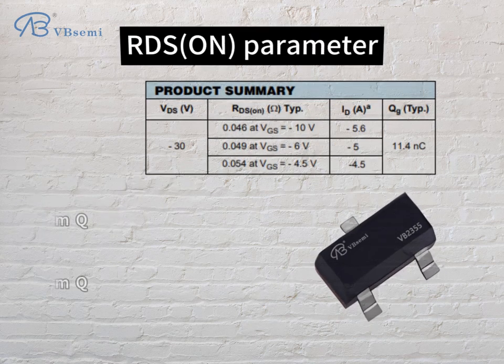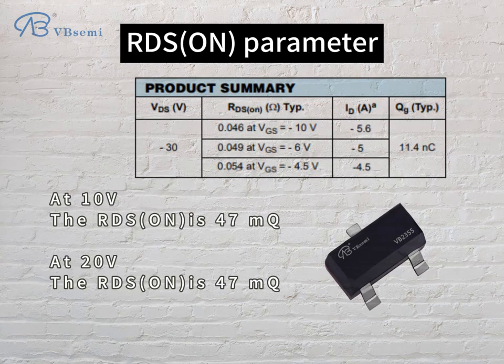RDS(on) parameter: at 10V, the RDS(on) is 47mΩ; at 20V, the RDS(on) is 47mΩ.